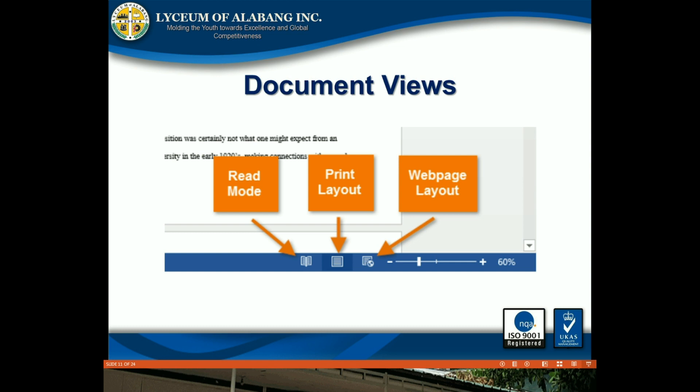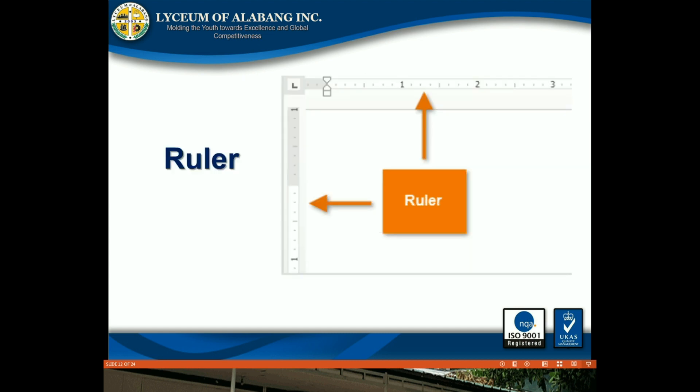Document views include Read mode for full screen, and Print Layout — selected by default — which shows the document as it would appear if printed. Web page layout shows how your document would look as a web page. The Ruler is located at the top and to the left of your document, making it easier to make alignment and spacing adjustments. If the ruler is not visible, go to the View tab and look at the Show group.